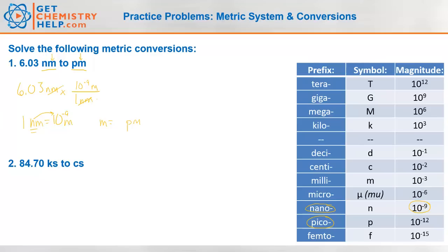Now we're in meters. We've got to turn meters into picometers. What's a picometer? Picometer means 10 to the negative 12th. So is it 10 to the negative 12th meters that equals one picometer, or is it a meter that equals 10 to the negative 12th picometers?